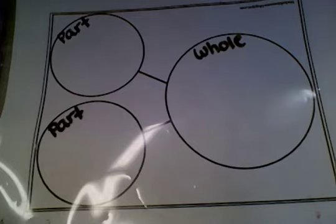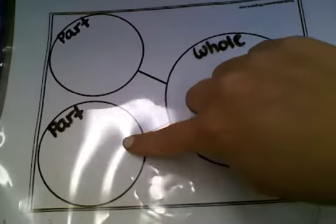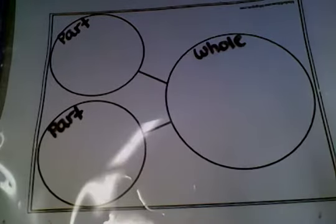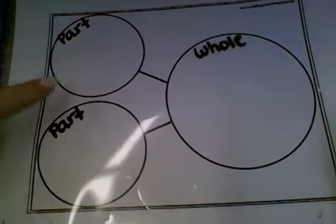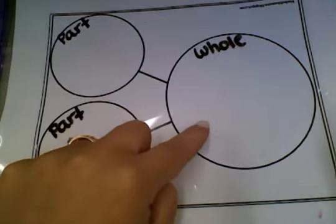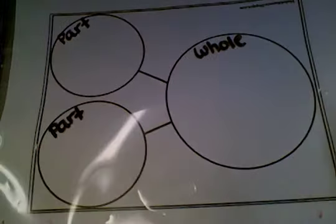We are going to do some adding using a number bond. When we have three circles like this, it's called a number bond. The two smaller circles are the parts, and the big circle is the whole, or the altogether.